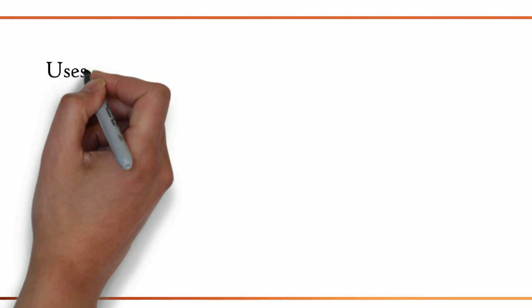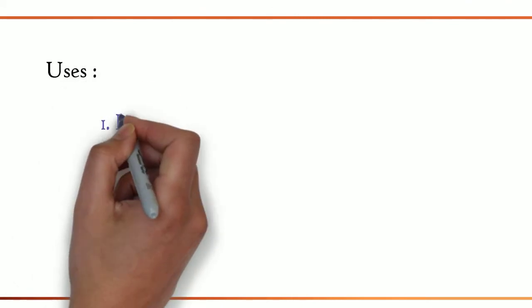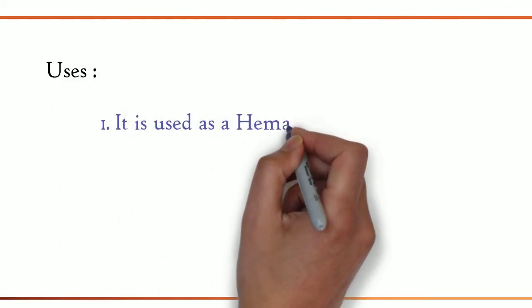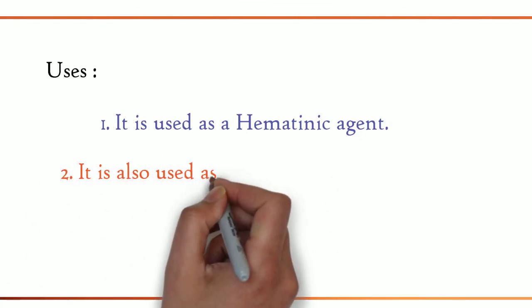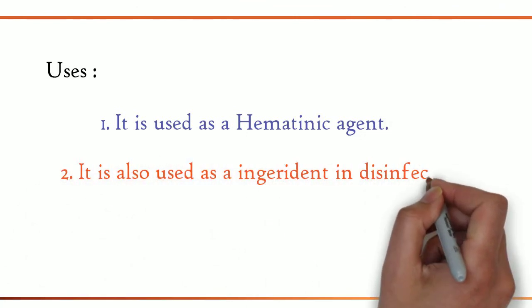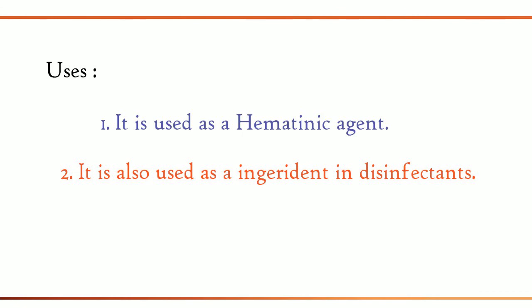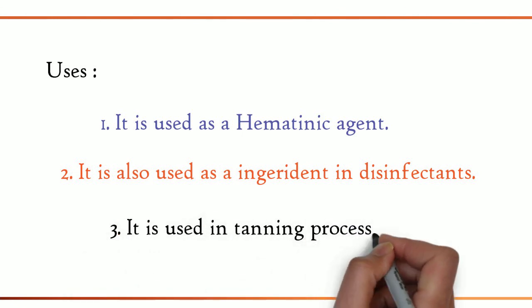At last, let us see the uses of ferrous sulfate. It is used as a hematonic agent. It is also used as an ingredient in disinfectants. It is used in tanning process.